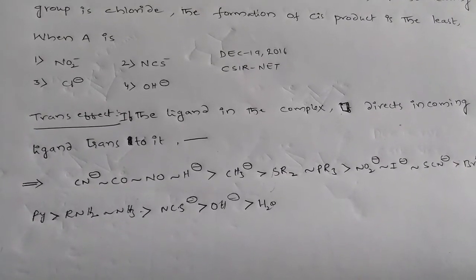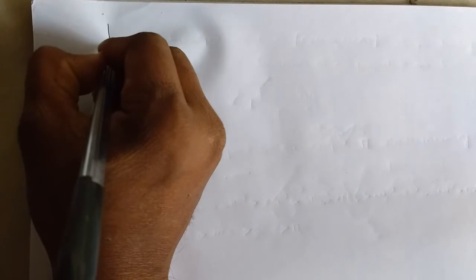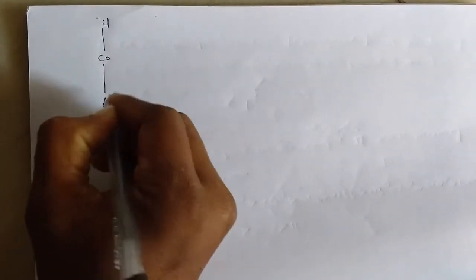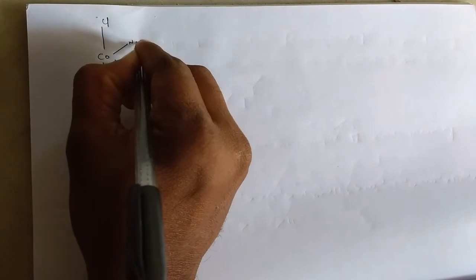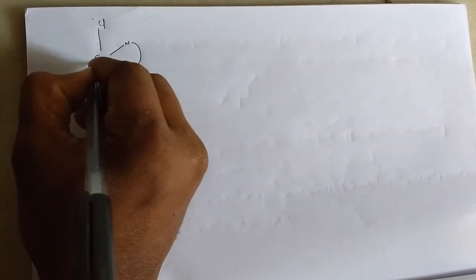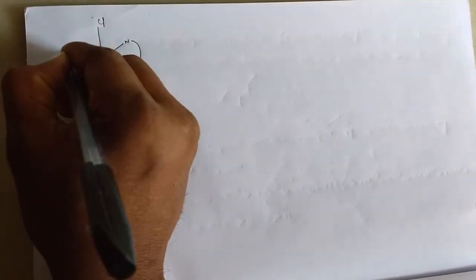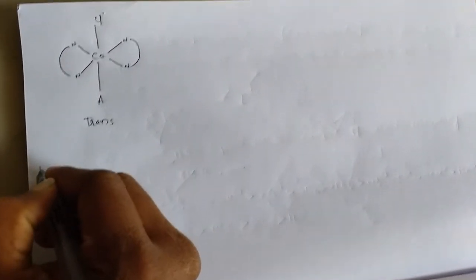Go for the solution of this, solving for the given problem. The given cobalt complex is trans, so we should draw the structure of it. Here, ethylene diamine is a bidentate ligand, so this is the trans-cobalt compound which is given.